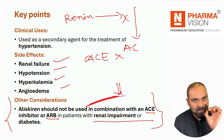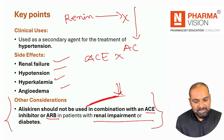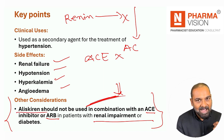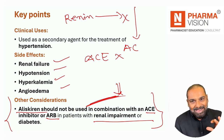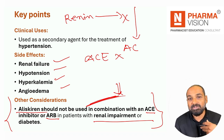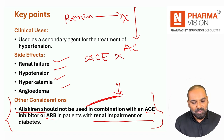Yeh aapke key take away hai yahan se, iske basis par aapko question poochhe ja sakte hai. This aliskirin - why it's not given in the combination? Because it's excessive suppression of the renin angiotensin system, and that's why this is not recommended, because indirectly that is causing severe damage on your heart as well as your kidney.